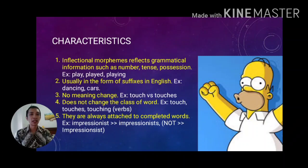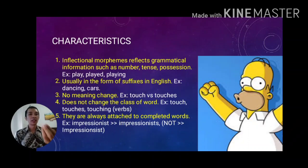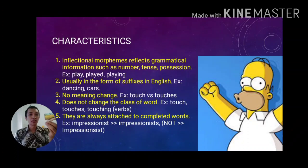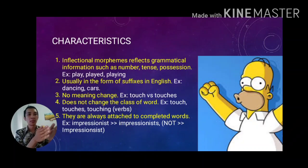There are some characteristics of inflections in morphology. The first is that inflectional morphemes reflect grammatical information such as number, tense, and possession. The change of words when we add a suffix or bound morpheme at the end is influenced by the intention to match the subject and predicate, to correlate with number, or to use a certain tense.